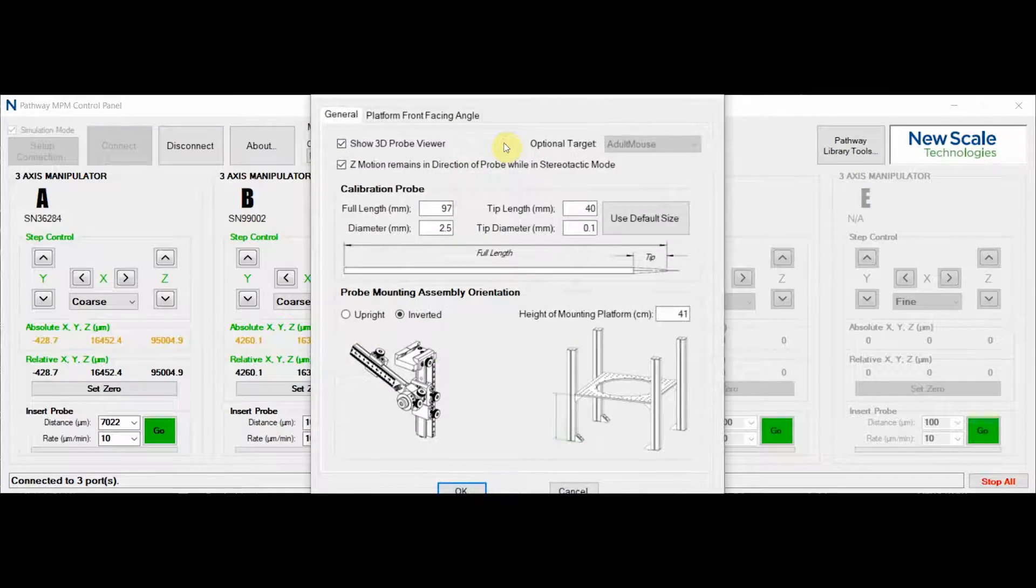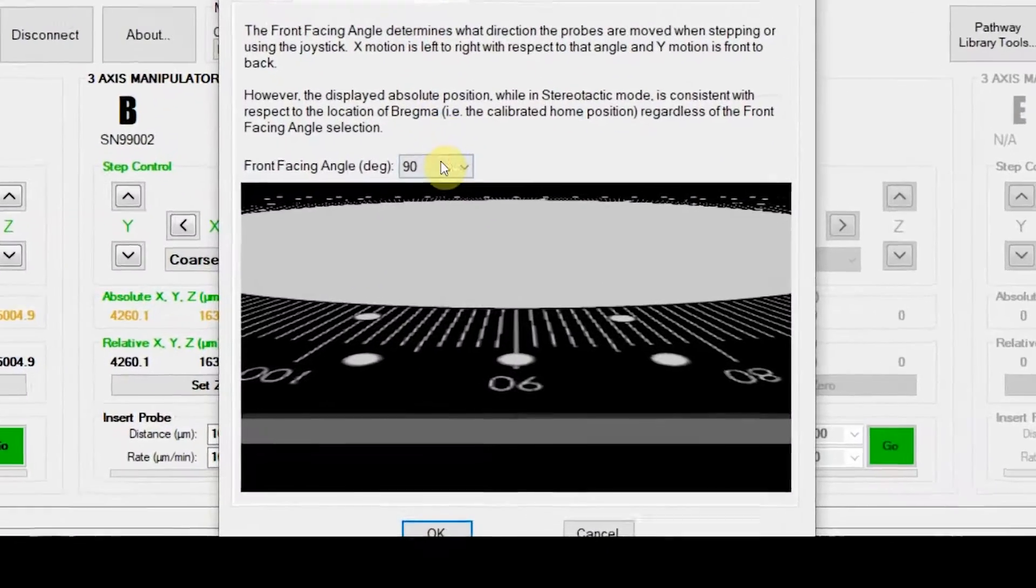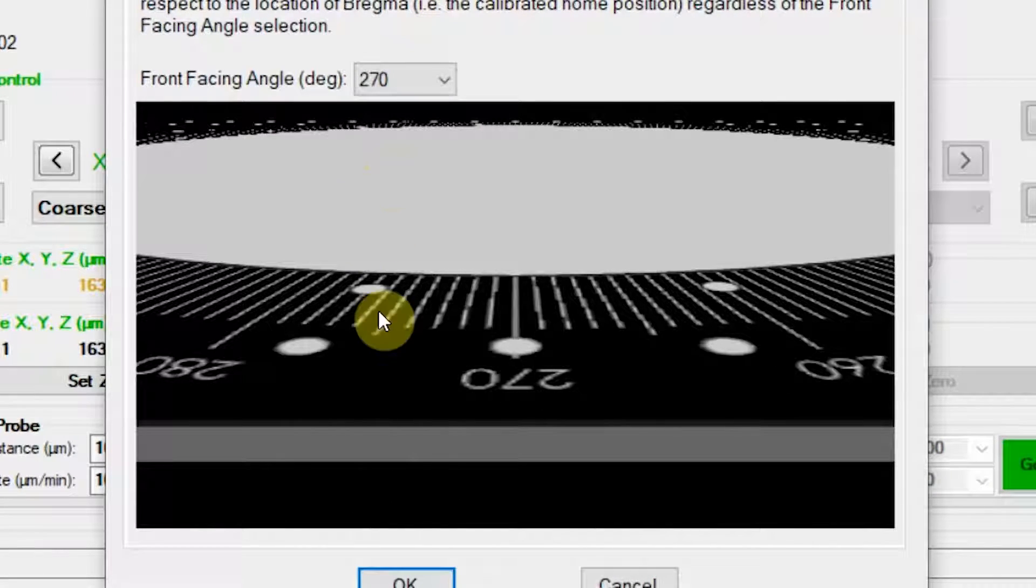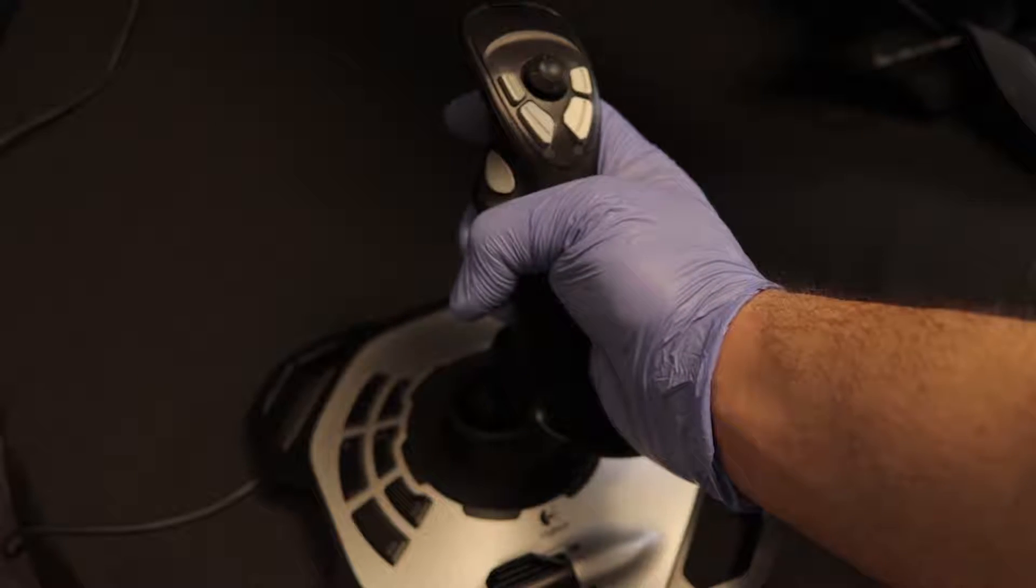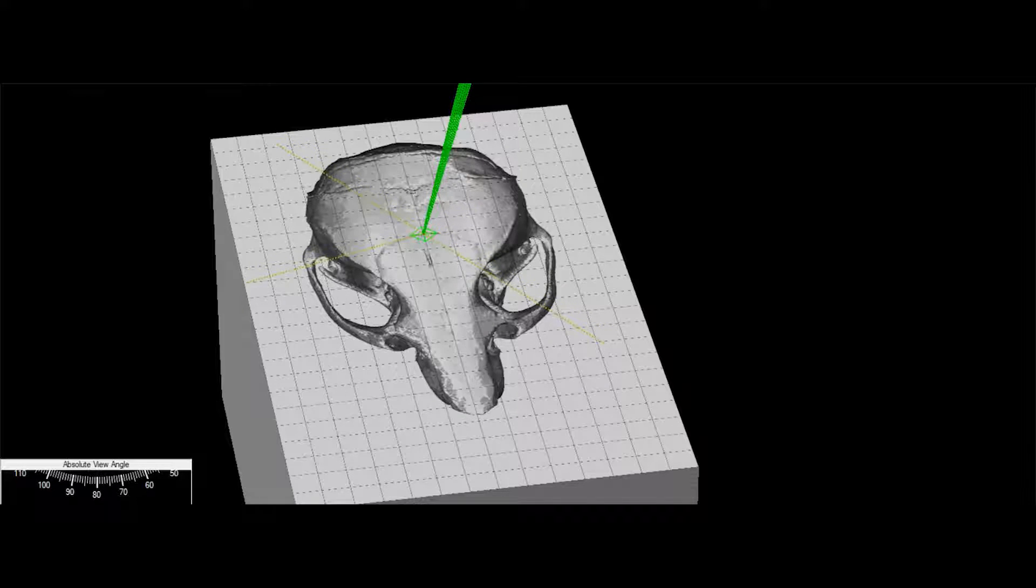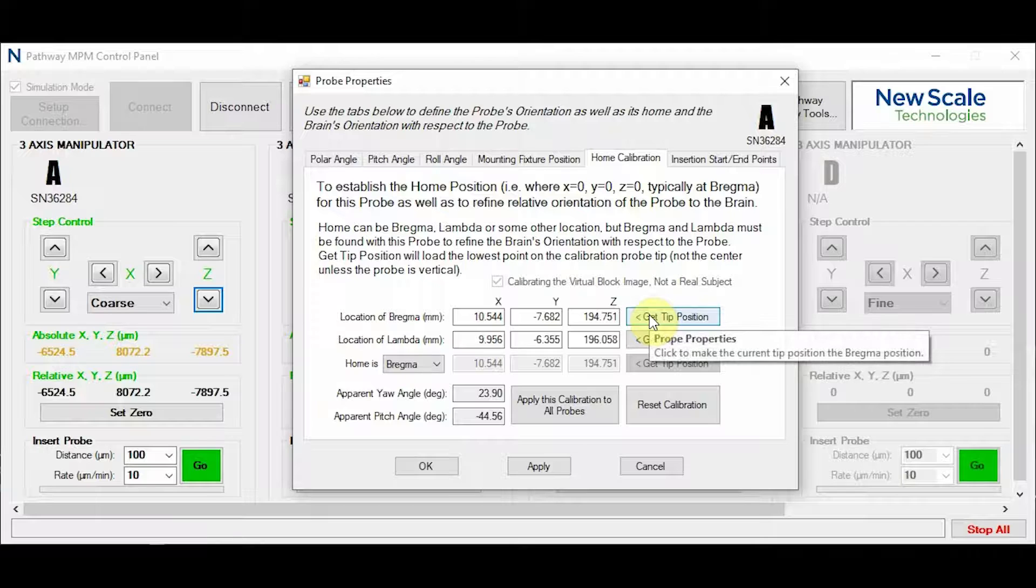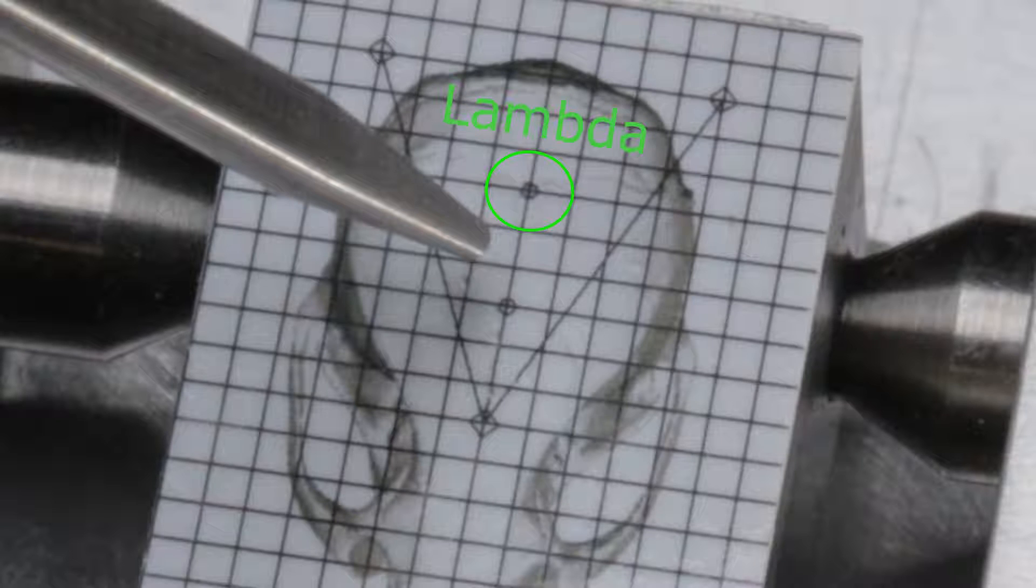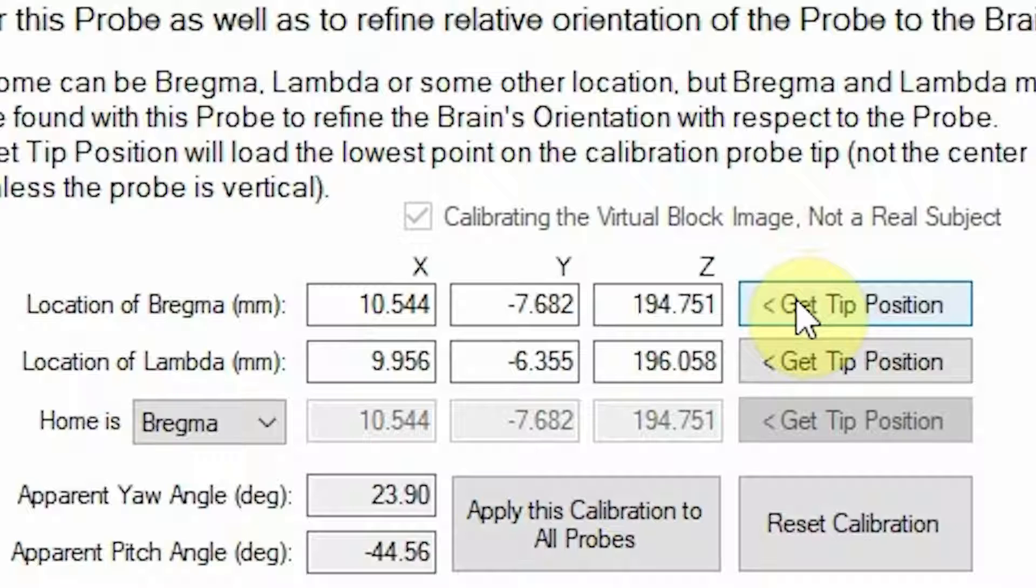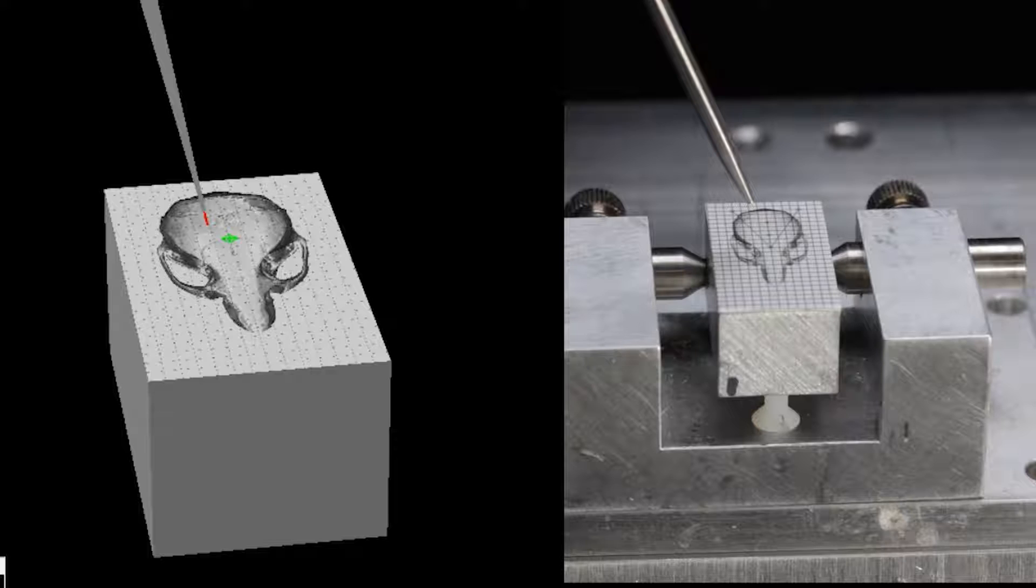Calibration of the axes is quick and simple. First, set your front-facing angle to tell the software from which direction you are viewing your NPM system. Then, to set a zero point, probe A is moved until it just touches Bregma. This point is captured and then the same process is done for Lambda. Once these two points are captured, the orientation of the virtual setup will correct itself to match the orientation of the physical setup.